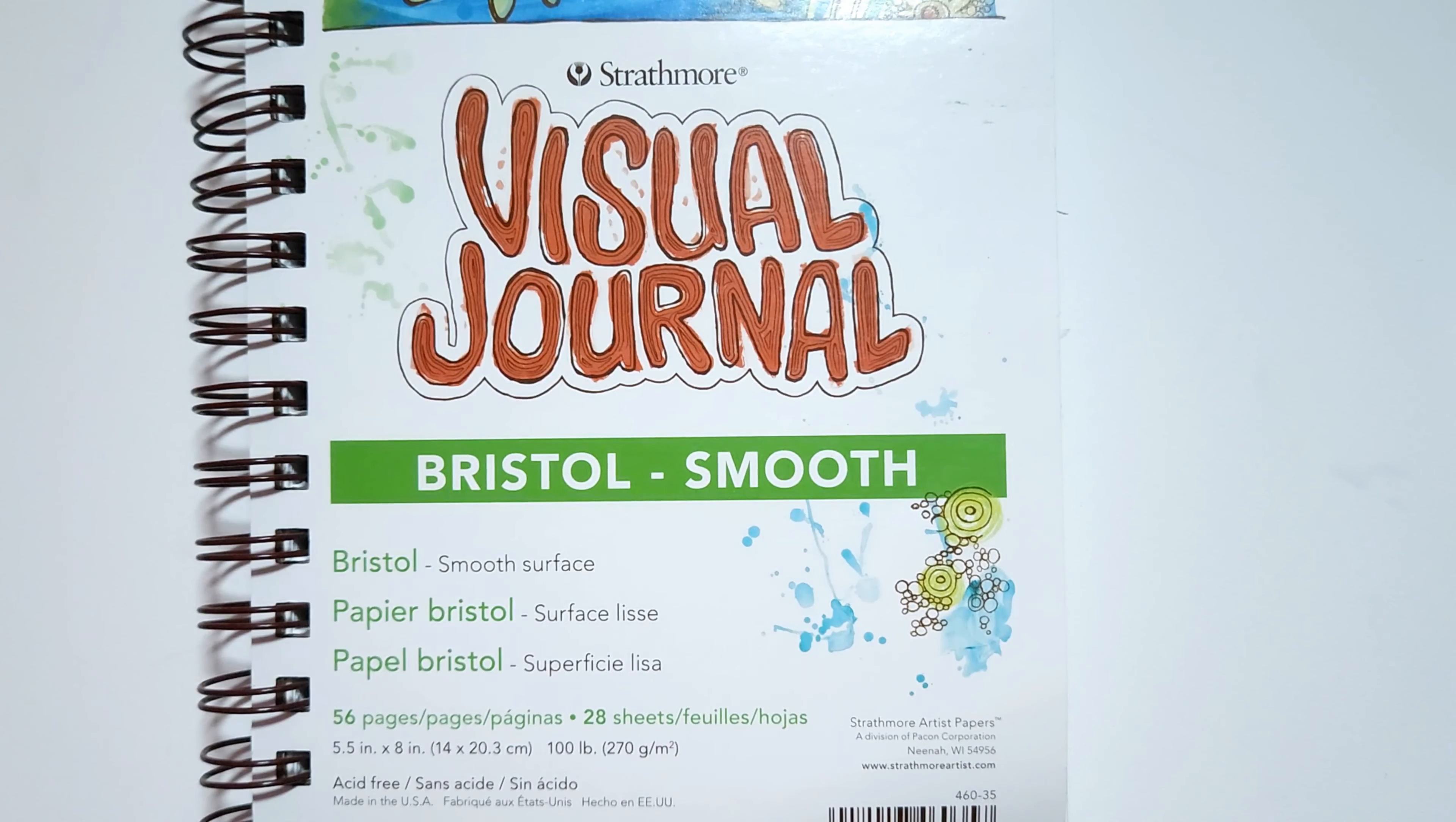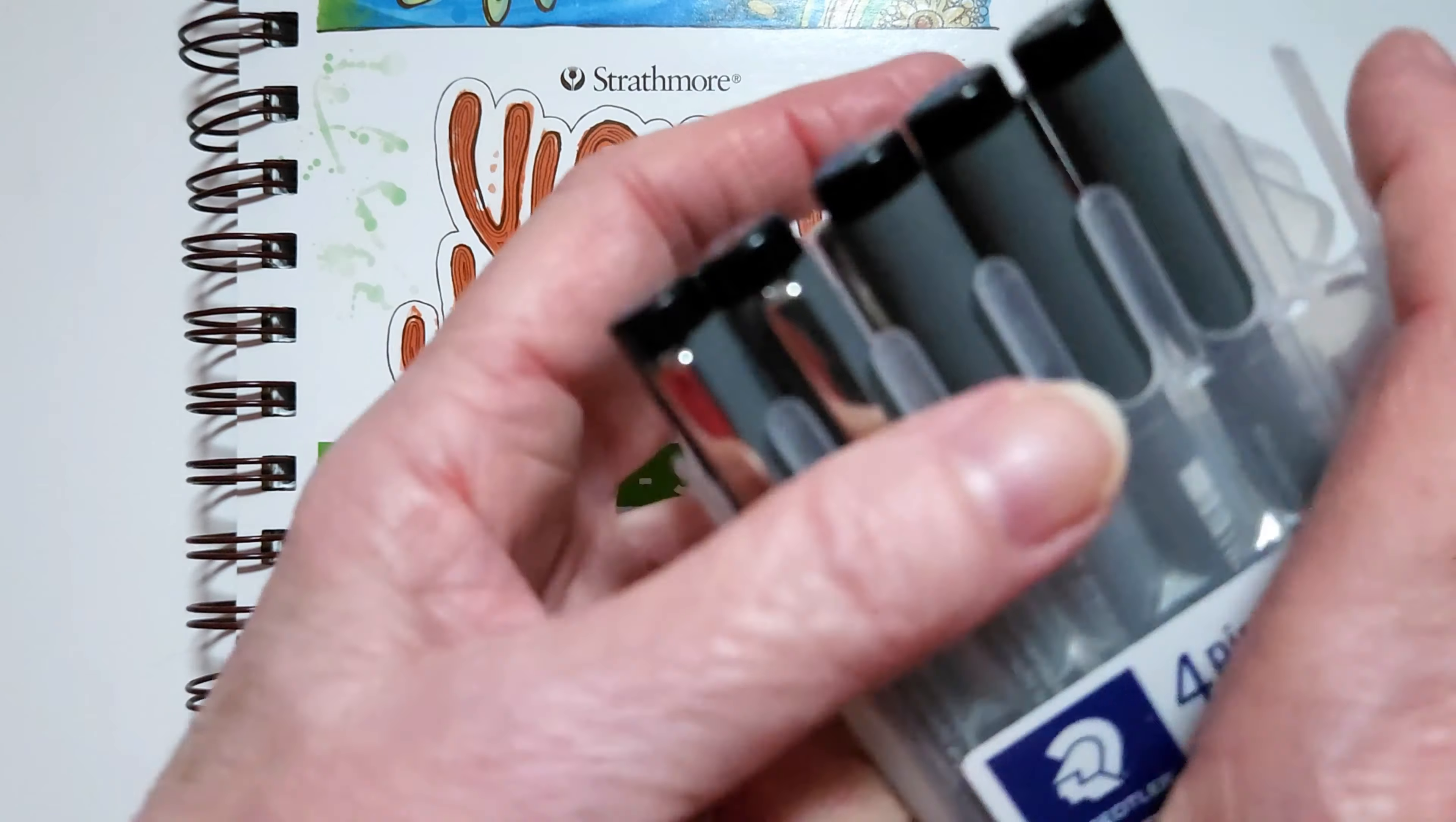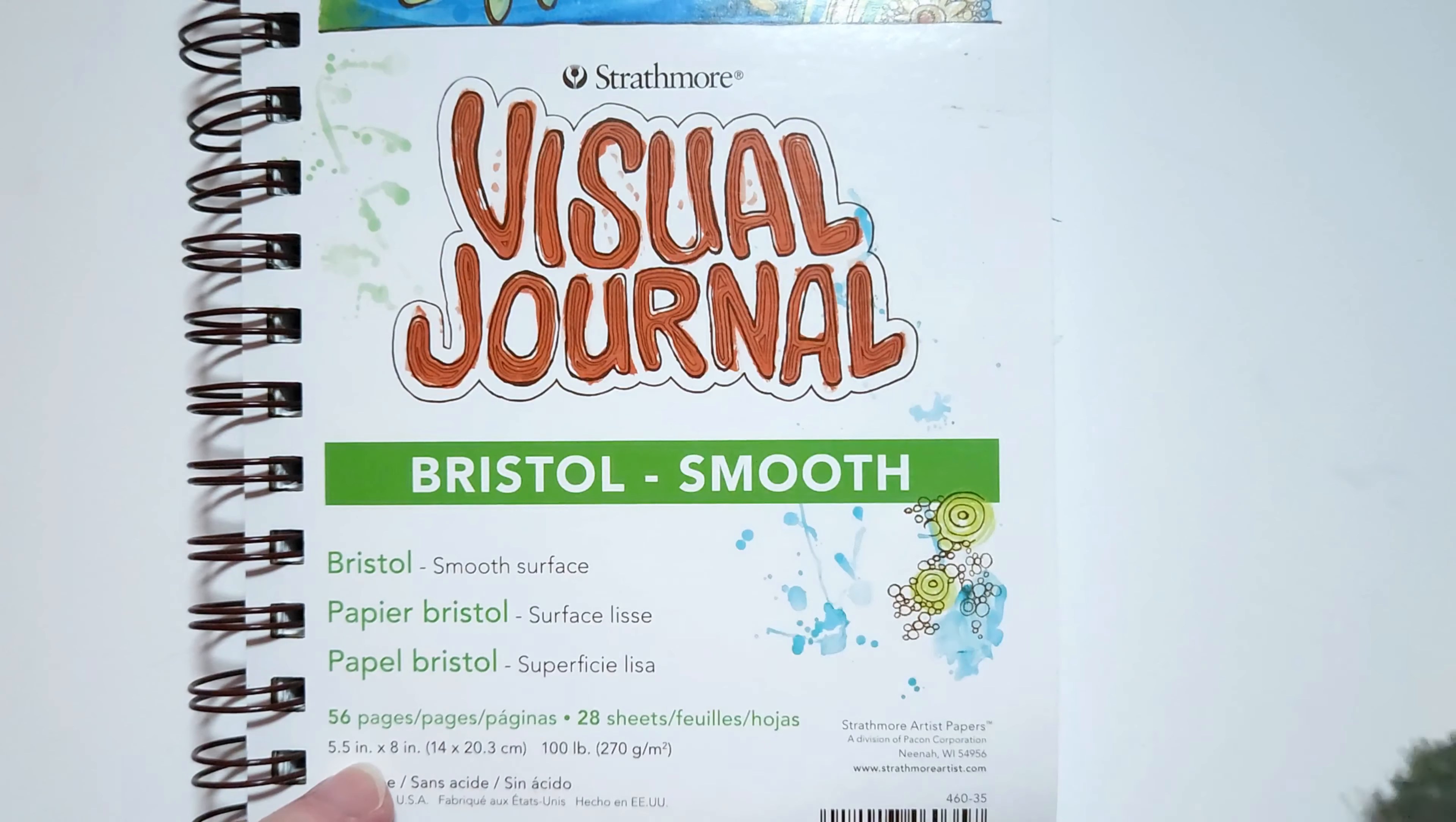This is what I'll be using today for my little doodle. I've got my Strathmore visual journal here. The paper is Bristol smooth. It's a great paper for ink and graphite and it's a small one today, five and a half inches by eight inches and I'm going to use that landscape. I've also got some fine tipped markers and I will leave a list in the description to let you know what I end up using. I've just got a regular pencil and my old dollar store paintbrush to just wipe off my page.